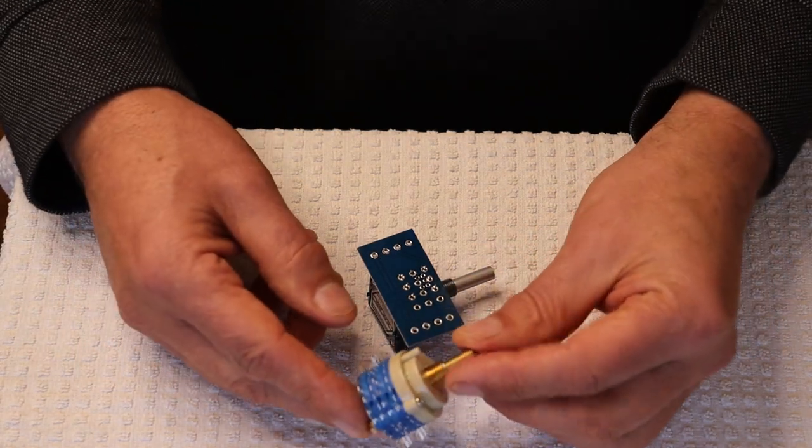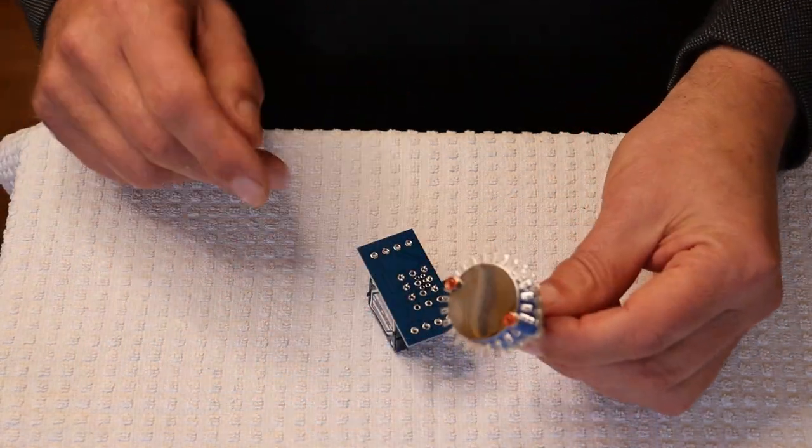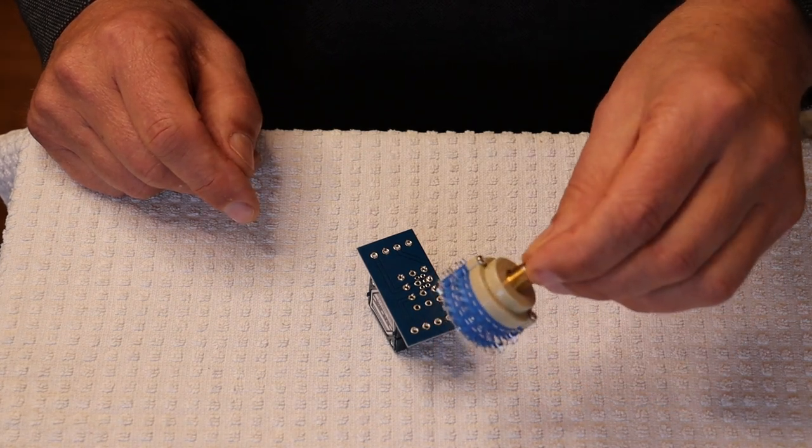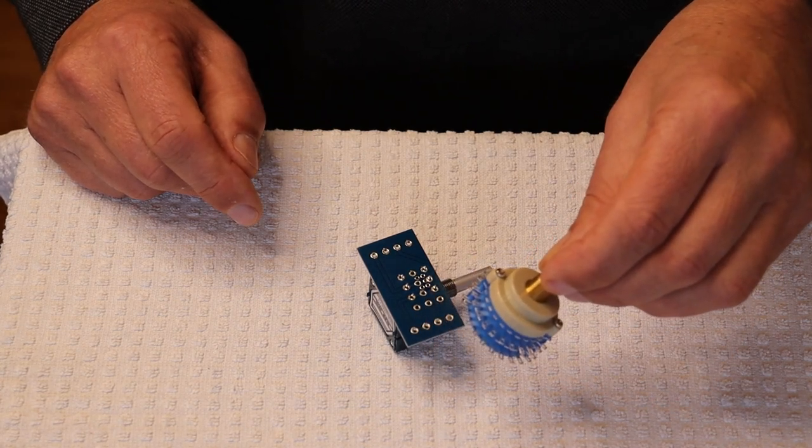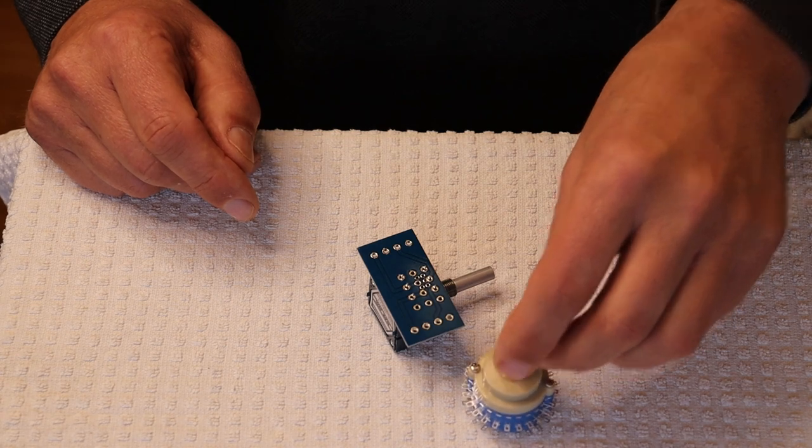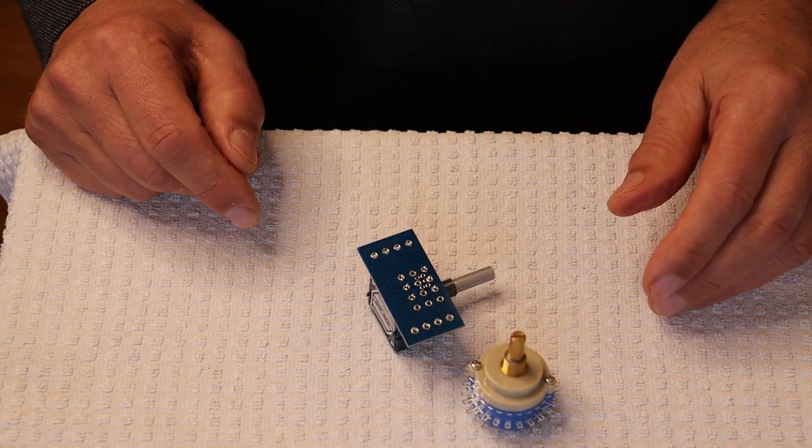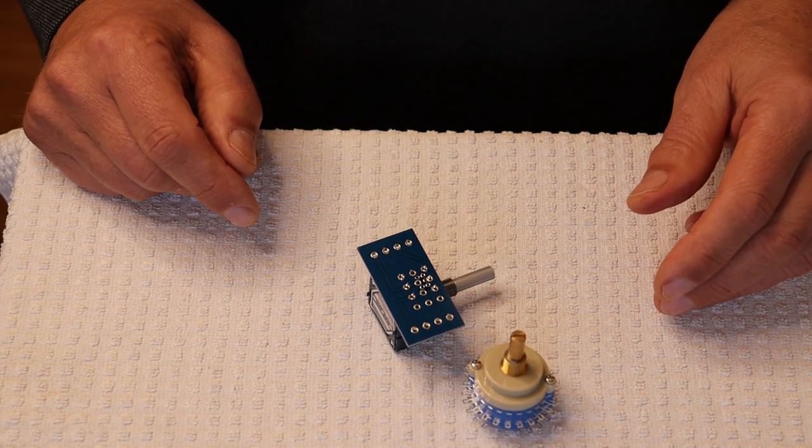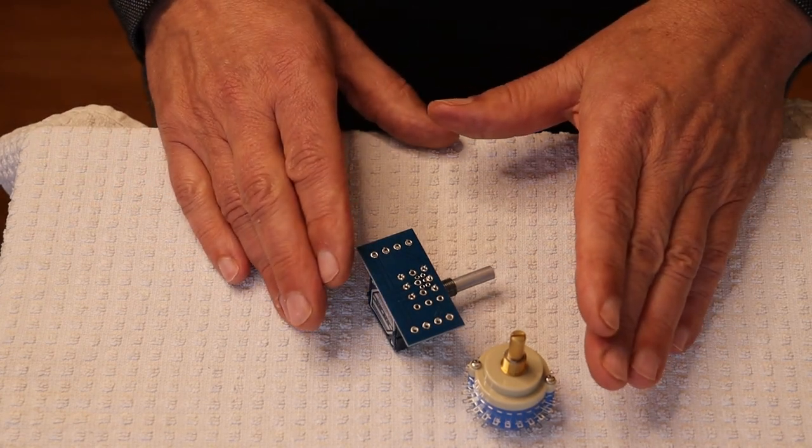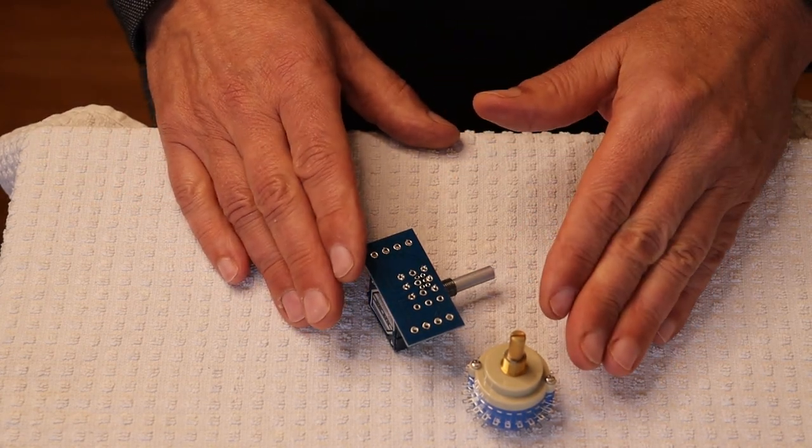But here is a stepped attenuator. And yes, it looks bloody complicated, but actually almost every contact does the same as its neighbor. And we'll talk a little bit more about how that works in just a minute. So let me just go grab some sketches and I'll show you the differences about how these two pots work.